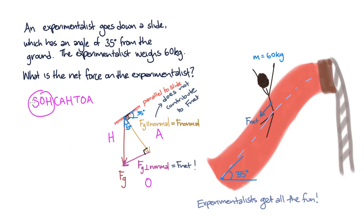So we have that sine of 35 degrees is equal to our net force divided by our gravitational force. We know that the gravitational force Fg is equal to mass times acceleration due to gravity. So if we plug in all of our values and rearrange our equation, we find that the net force is equal to mg times sine of 35 degrees.